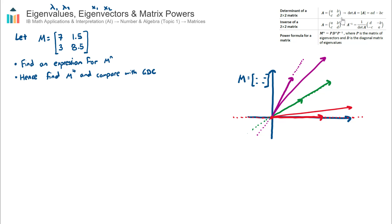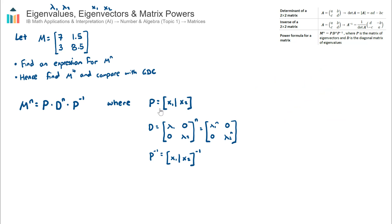On the AI formula sheet, the third matrix formula is the power formula: M to the power of n. So M to the power of n — some matrix, most likely a two by two — raised to the power of n equals this new matrix P, where P is the matrix of eigenvectors. P will be a two by two: the first column is eigenvector one, and the second column is eigenvector two. This is multiplied by matrix D, which is the diagonal matrix of eigenvalues.